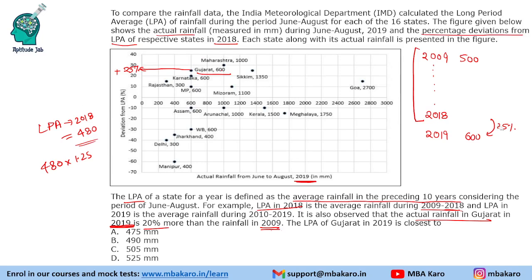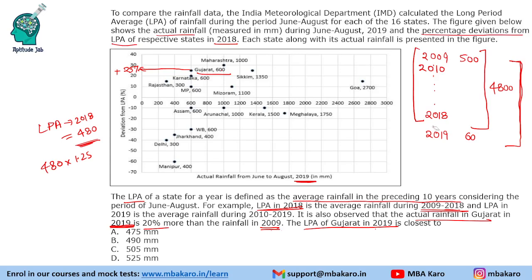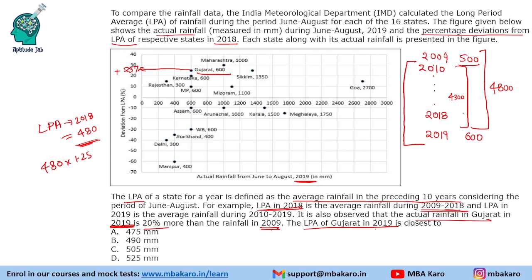LPA in 2018 is 480 mm, meaning it is the average of rainfall from 2009 to 2018 — so the total rainfall over those 10 years is 4,800 mm. Now to find LPA in 2019, we need the total rainfall from 2010 to 2019. We take 4,800, subtract the 2009 value of 500, giving 4,300 for 2010 to 2018. Then add 2019's rainfall of 600, giving a total of 4,900 mm. The LPA for 2019 is therefore 4,900 divided by 10, which is 490 mm.